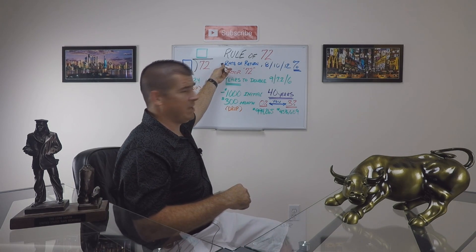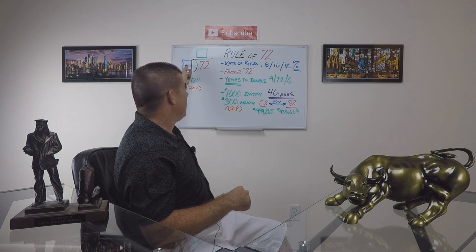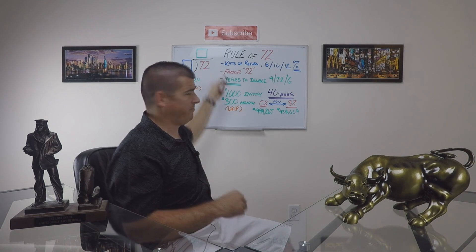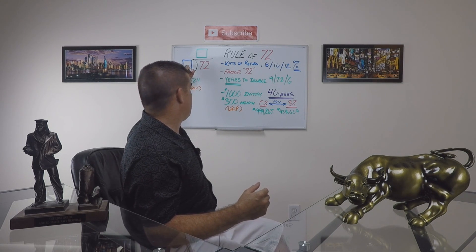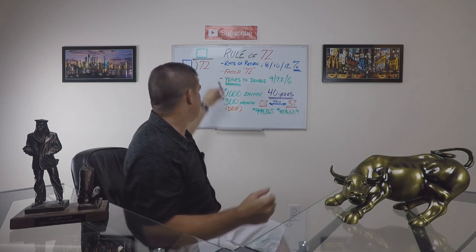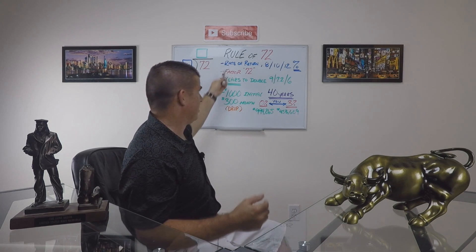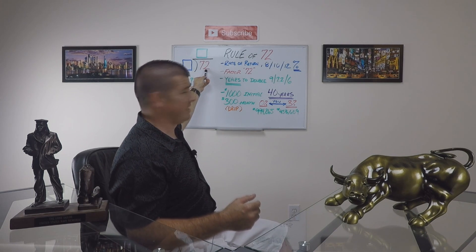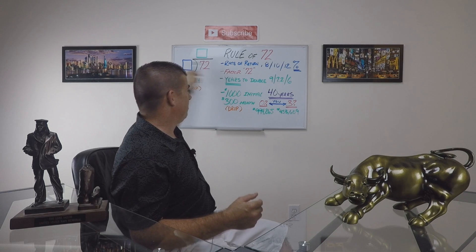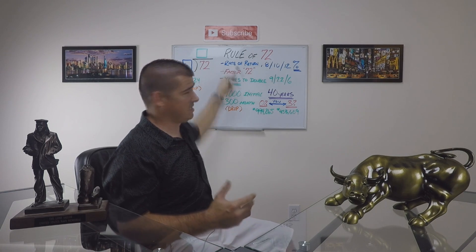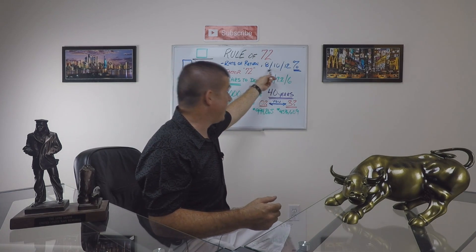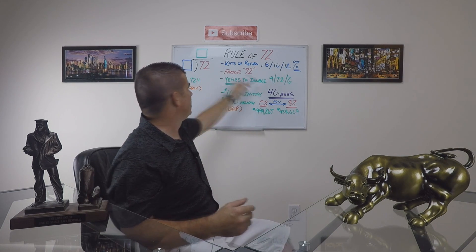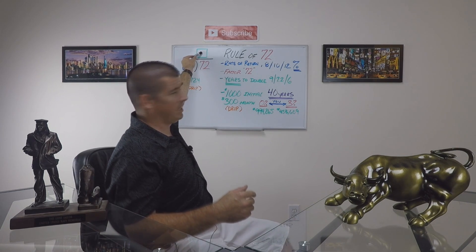So the rate of return goes over here, and we're basically dividing 72, which is the factor. You simply take 72 and divide it by the anticipated rate of return — whether it be 8%, 10%, or 12% — and it's basically going to give you the years to double.